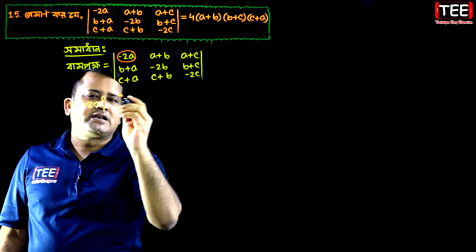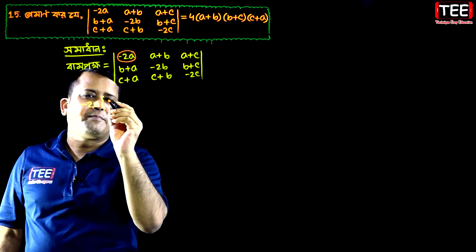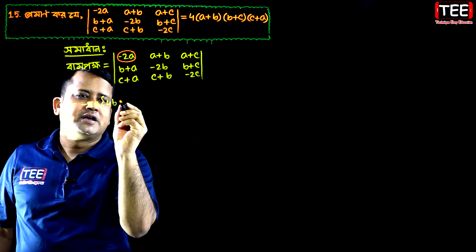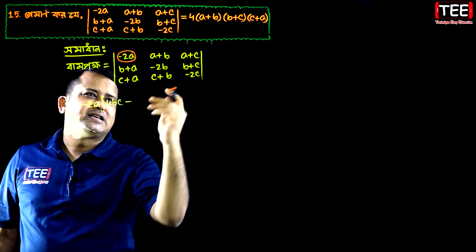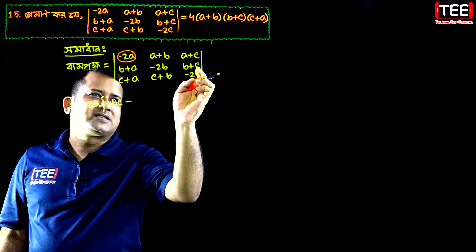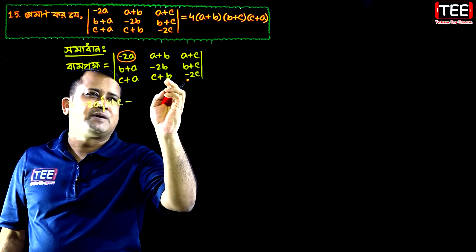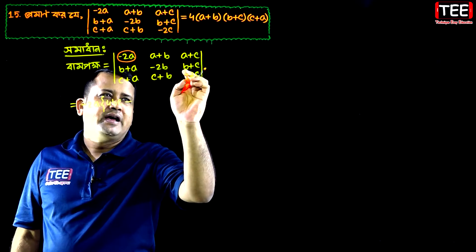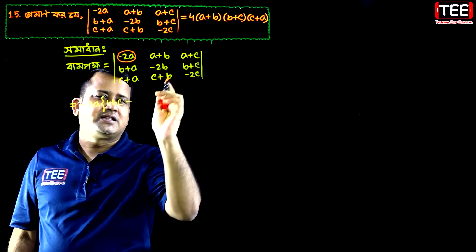So minus 2a plus 2a plus 4a, bc. And minus 1 is minus 1, so minus b plus c plus b; c plus b means b plus c.